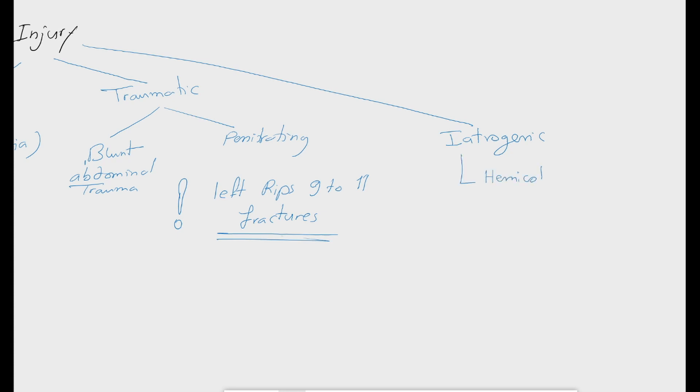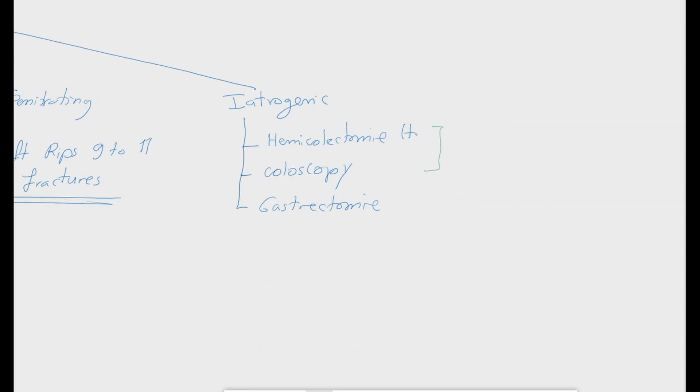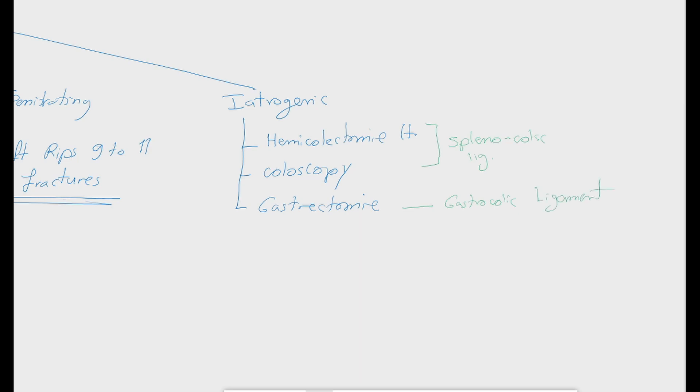The third category of splenic injuries are the iatrogenic injuries. As mentioned before, when we talk about the peritoneal ligaments, left hemicolectomy or a colonoscopy can lead to a traction on the splenocolic ligament leading to a tear in the lower splenic pole. Also during gastrectomy, traction on the gastrosplenic ligament can cause injury.